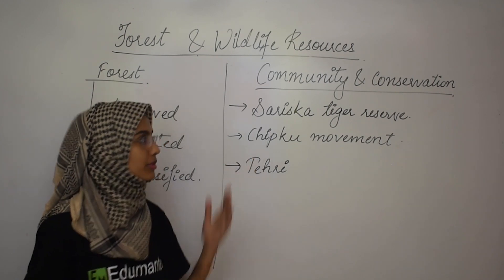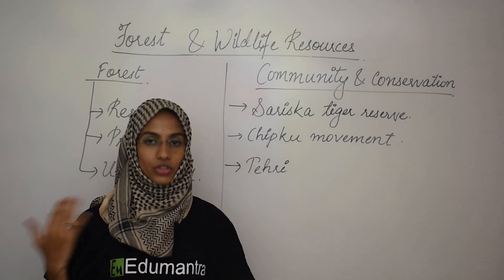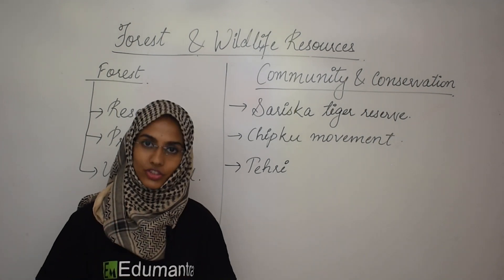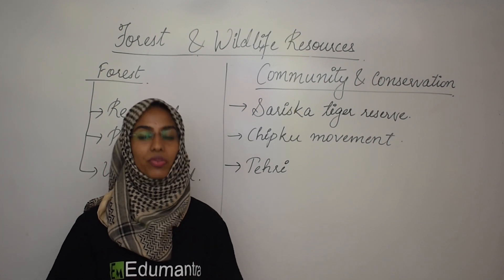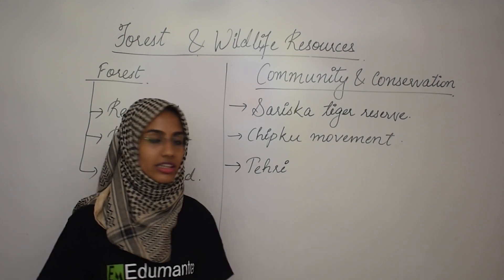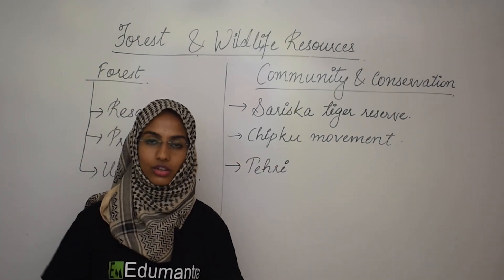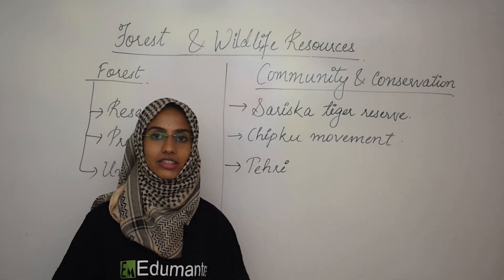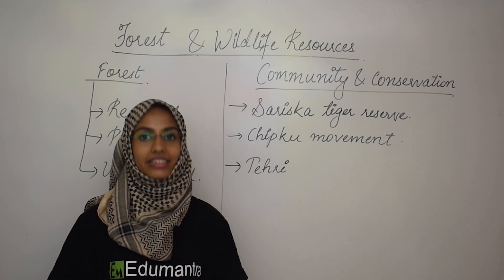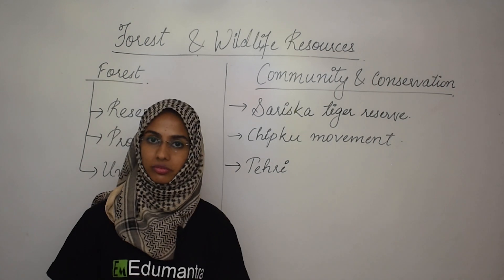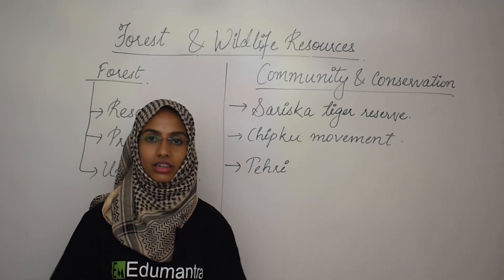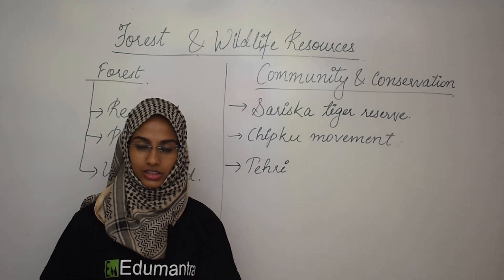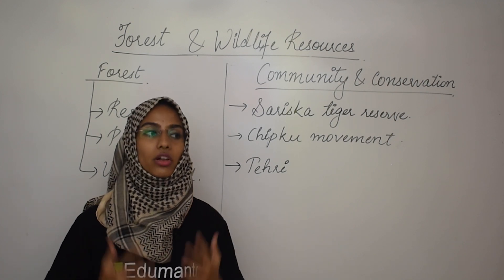Coming to the last part of this chapter, which is community and conservation. We have already seen how the government and individuals together carry out different projects and implementations to preserve wildlife and maintain a balance for human existence. In many places, several communities come together to try and preserve wildlife. For example, the Sariska Tiger Reserve in Rajasthan — the community there led a movement against mining activity. The second one is the Chipko movement, a very famous movement that happened in the Himalayas against deforestation — people hugged trees together so that others could not cut them down.